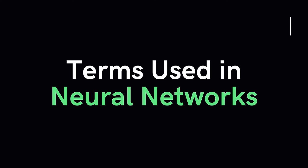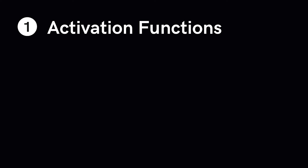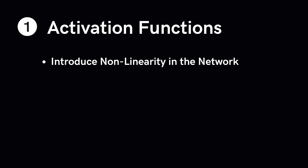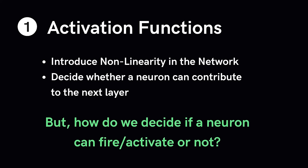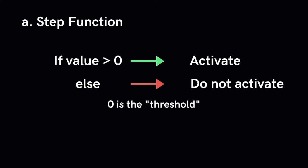Now let's talk about the most common terminologies used in deep learning. The activation function serves to introduce non-linearity into the network and decides whether a particular neuron can contribute to the next layer. The first idea is to activate the neuron if it is above a certain threshold — if less than this threshold, don't activate it. This is essentially a step function: output is 1 or activated when the value is greater than the threshold, and not activated otherwise.